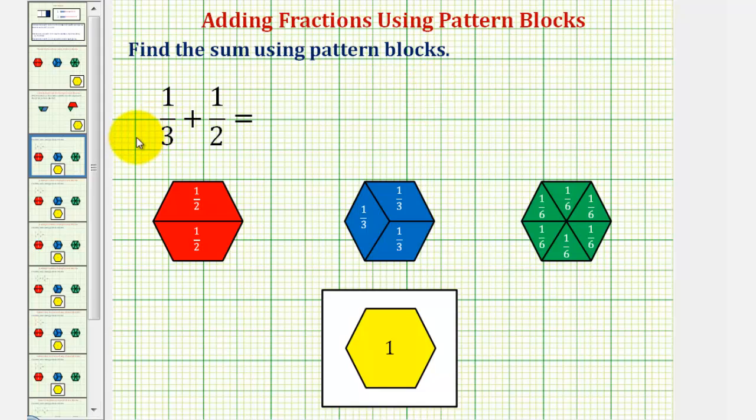We want to find the sum of one-third and one-half using pattern blocks. So we'll define one yellow pattern block or one yellow hexagon as one whole.